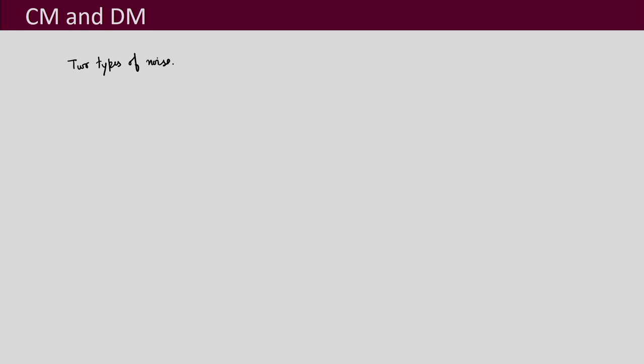Now let us continue with our discussion. In this lecture let us see what are the different types of noise that are present in your conducted EMI. There are two types of noise which are mainly present in power electronic converters. One is called the common mode noise, in short written as CM, and another is differential mode noise, in short written as DM.